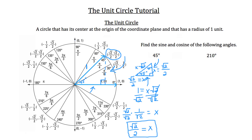All the x and y values around the unit circle are derived from special right triangles — specifically 30-60-90 right triangles and 45-45-90 right triangles. All the angles around the unit circle happen to be multiples or combinations of 30 degrees or 45 degrees.